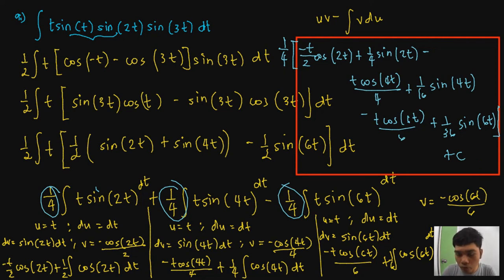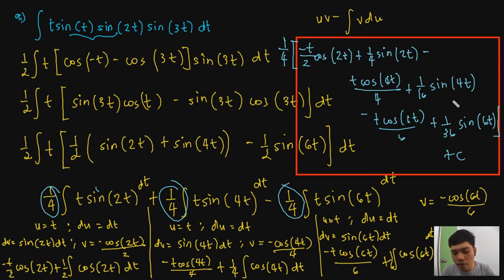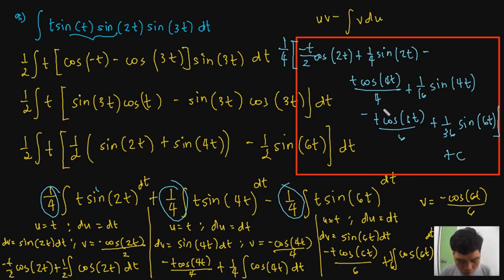Don't forget the (1/4) factor that multiplies all terms. Checking against the module answer: the module factors out 1/576 (the LCD of 4, 16, and 36), yielding a combined numerator. For example, the sin(2t) term becomes (1/4)·(1/4) = 1/16 in our form, matching 36/576 = 1/16 in the module. All terms match — the forms are equivalent.